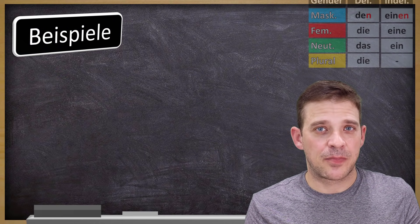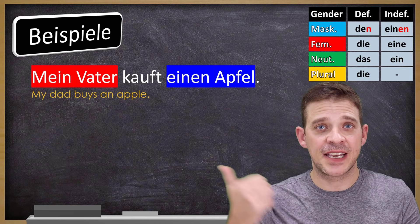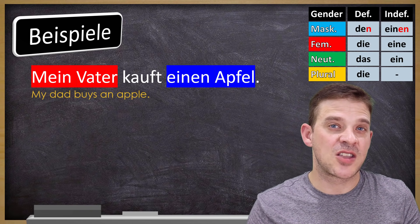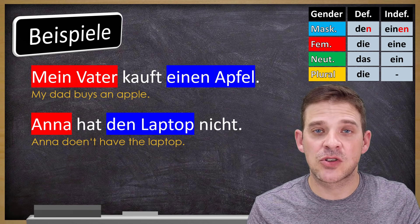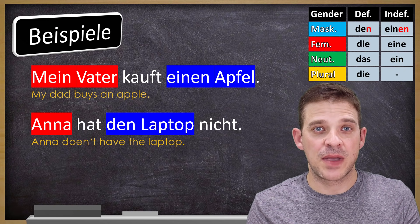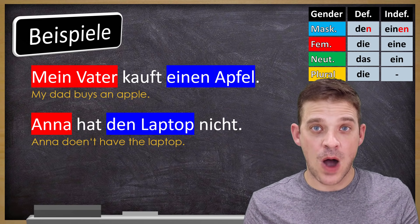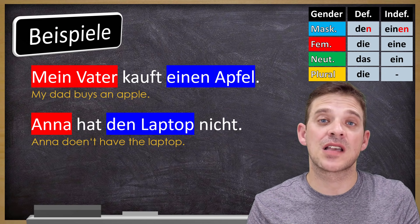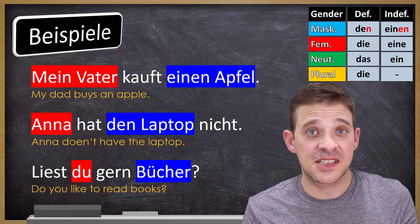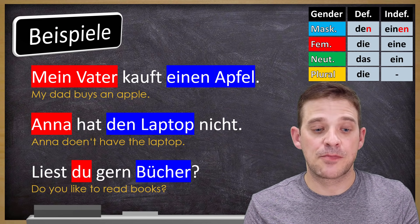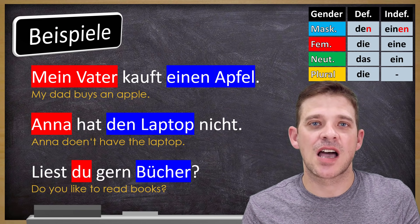Some more examples: 'Mein Vater kauft einen Apfel' — 'mein Vater' is the subject, 'einen Apfel' is the accusative object because of the verb 'kaufen.' 'Anna hat den Laptop nicht' — 'den Laptop' is accusative because of 'haben.' 'Liest du gern Bücher?' — 'Bücher' is in accusative because 'lesen' requires the accusative case.